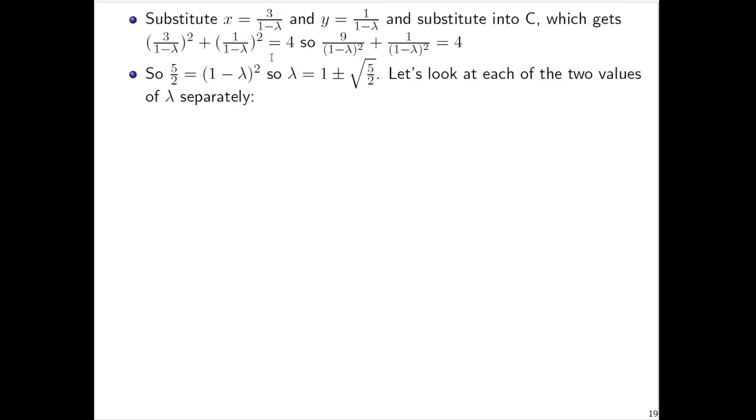This plus or minus sign is the word 'or'. So we actually get two values of λ, which we should examine separately. If λ = 1 + √(5/2), then using D and E, we'll get this combo of x and y values. If λ = 1 - √(5/2), then we get the following combo values.